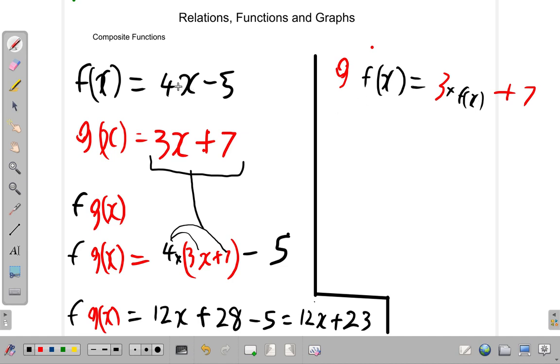What is f of x? What exactly is f of x? It is 4x minus 5. So why don't you write that down, 3 multiplied by 4x minus 5.